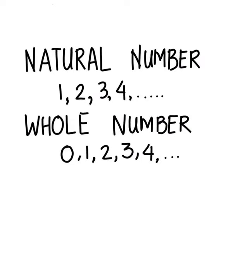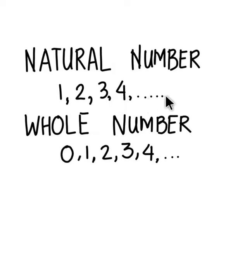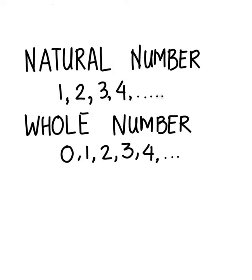We have learned earlier that natural numbers start from 1 and move on like 1, 2, 3, 4, 5 and up till infinity. So the smallest natural number is 1 and the biggest number is infinity.